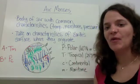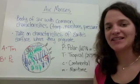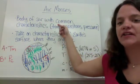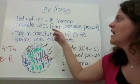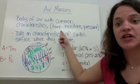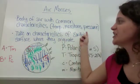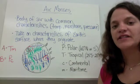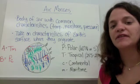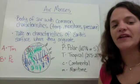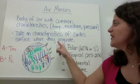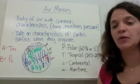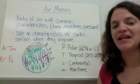First of all, you need to know what an air mass is. An air mass is a body of air with common characteristics, such as temperature, moisture, and pressure. Air masses take on or adopt the characteristics of Earth's surface where they originate. The origin of something is the beginning of it, so to originate means to begin.